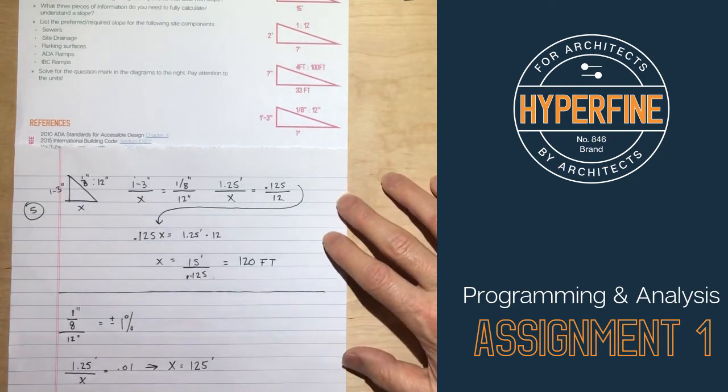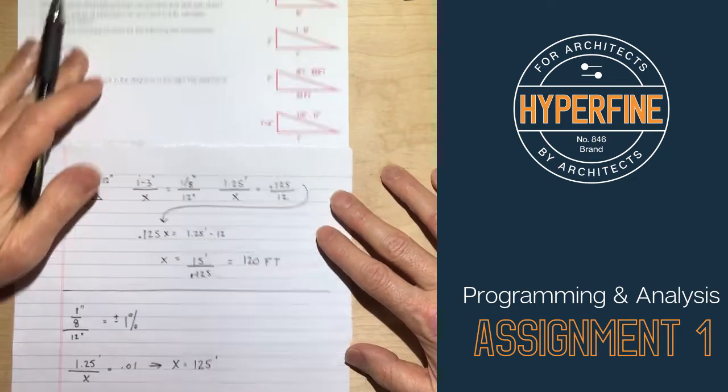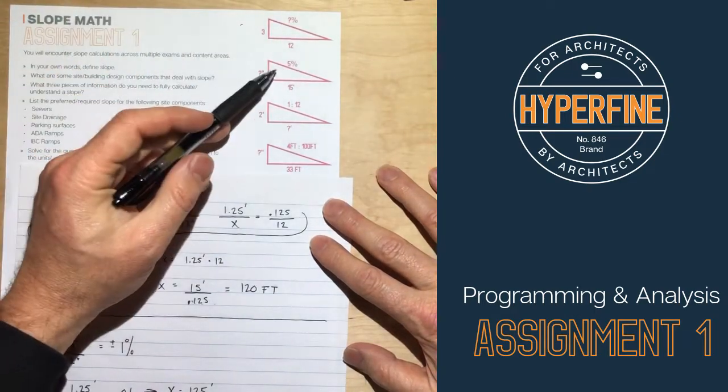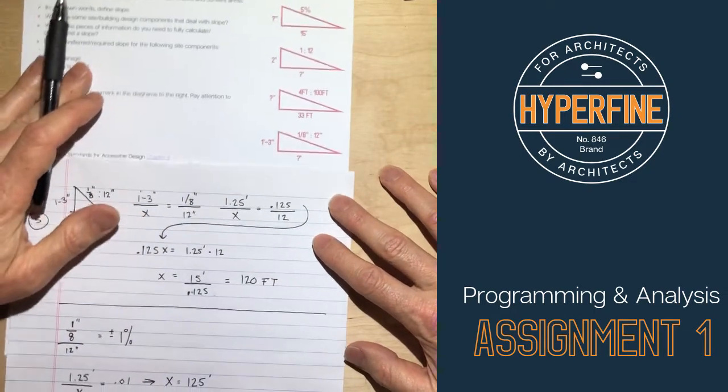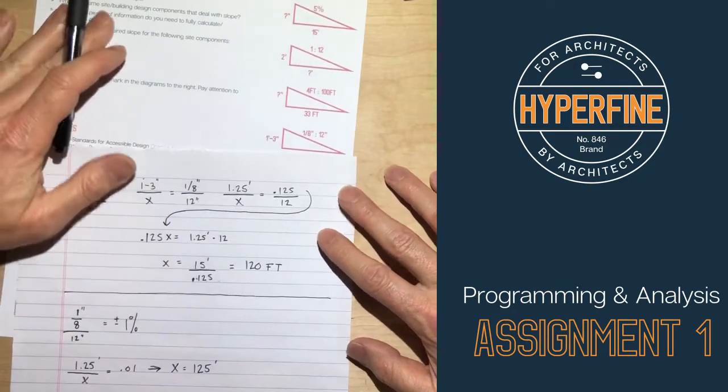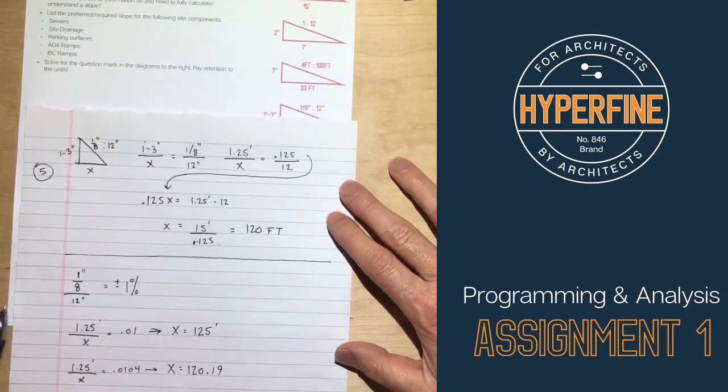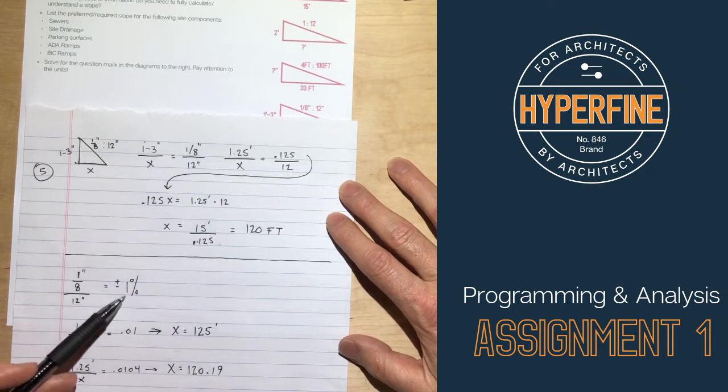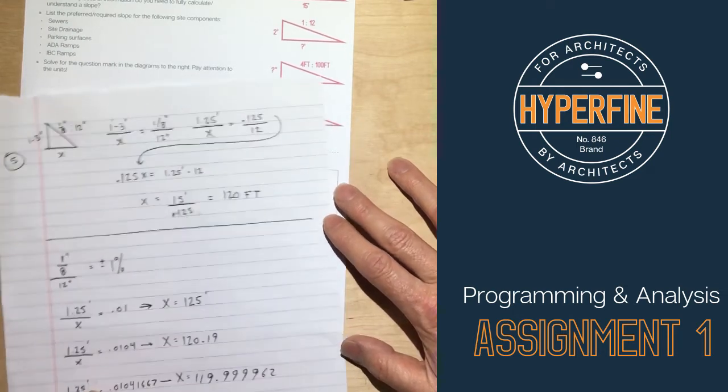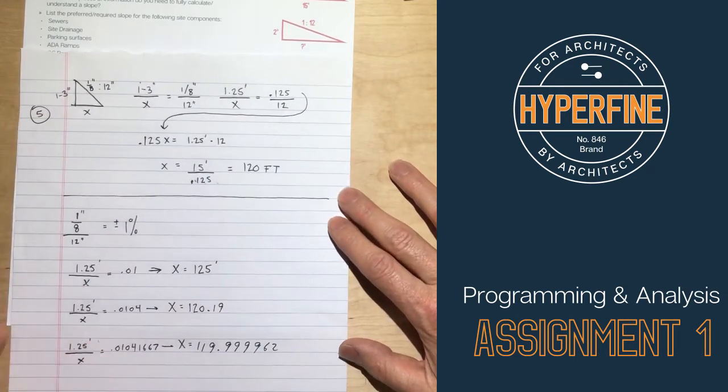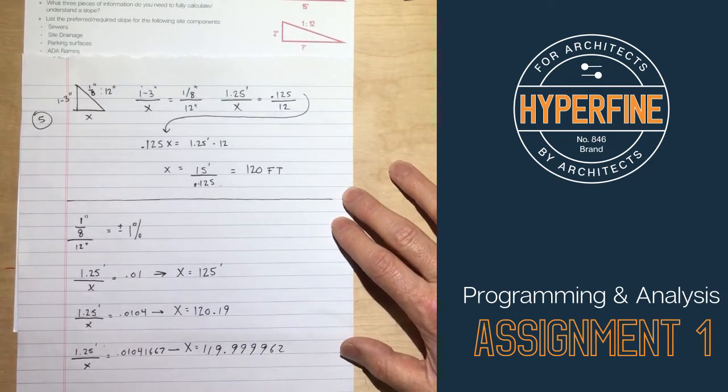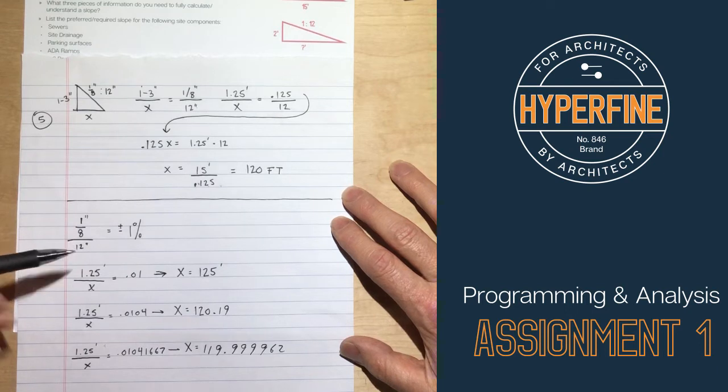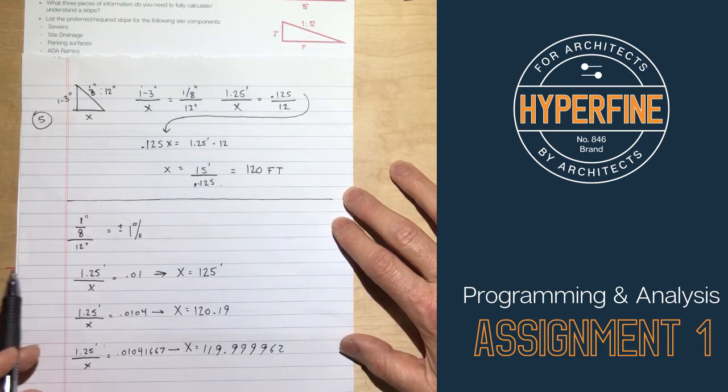All right, the other way we could solve this is we could use the same percentage, the same sort of percent one that we did earlier. But this is an area where you have to pay attention to rounding, right? Because one thing you might recognize is that 1 eighth of an inch over 12 is just about 1% slope. And that's good enough to know for, you know, a question that asks for what's the slope of a sewer, and it happens to be 1%, you know? So an eighth of an inch in 12 is a 1% slope, but it's not exactly 1% slope.